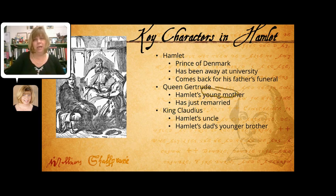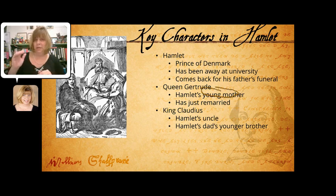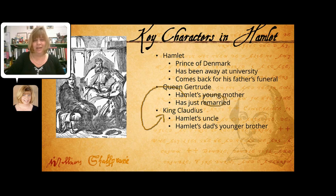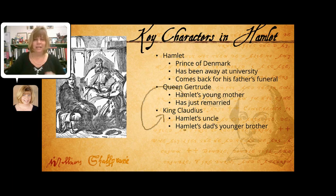We meet Queen Gertrude — Hamlet's mother. She's actually quite young as a mother; there's a lot of talk in the play about how she was probably a very young teenager who married the older king. We find out that Gertrude has just gotten married again, even though Hamlet's father has just died. The person she's married to is King Claudius, the new king — Hamlet's uncle and his dad's younger brother, who succeeds to the throne after Hamlet's father dies.